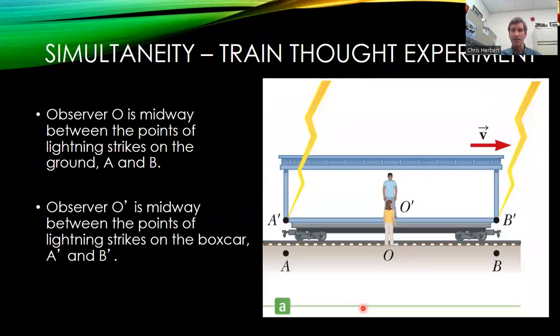Now, in this case, lightning strikes the front and the back of the boxcar. Well, at least according to one observer. Observer O is midway between the two points when the lightning strikes. She watches the lightning strike and basically observes in her frame of reference that they both hit the front and back at the same time.